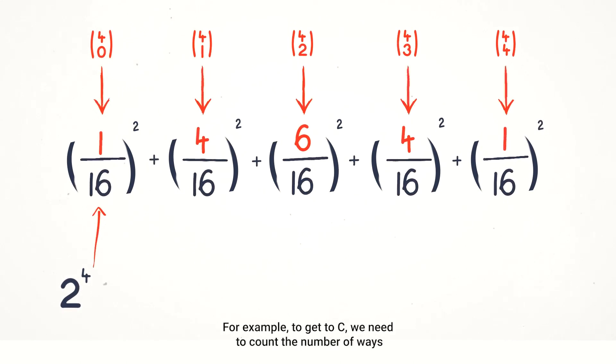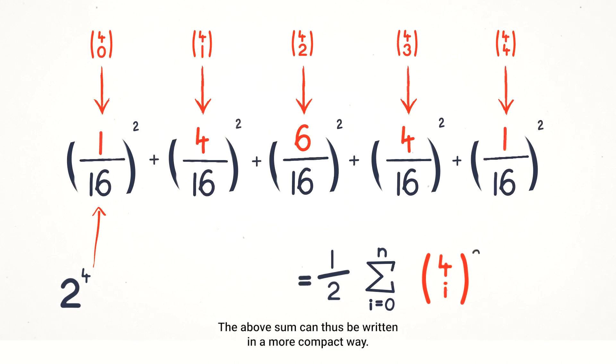The numerators count the number of possible paths to each of those points. For example, to get to C, we need to count the number of ways we can get 2 heads and 2 tails. Mathematically, this is 4 choose 2, which is equal to 6. The above sum can thus be written in a more compact way.